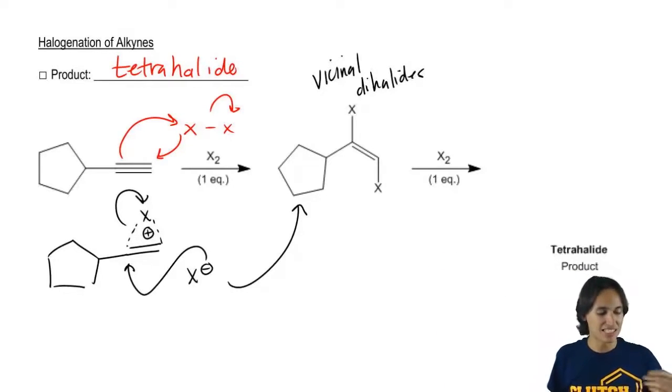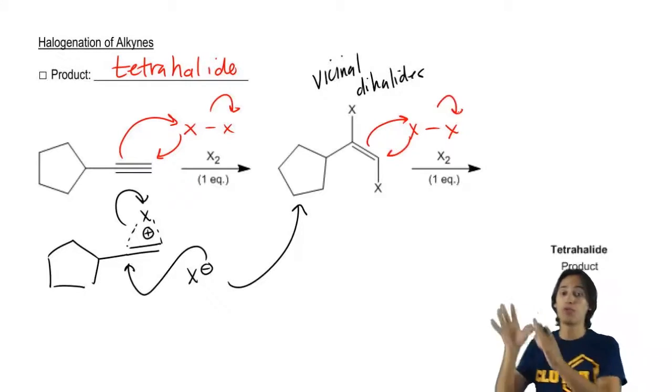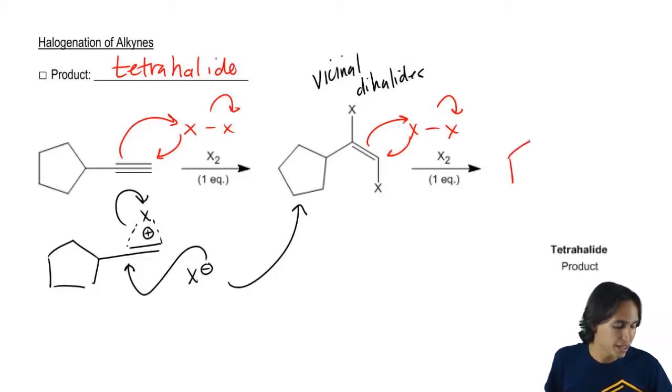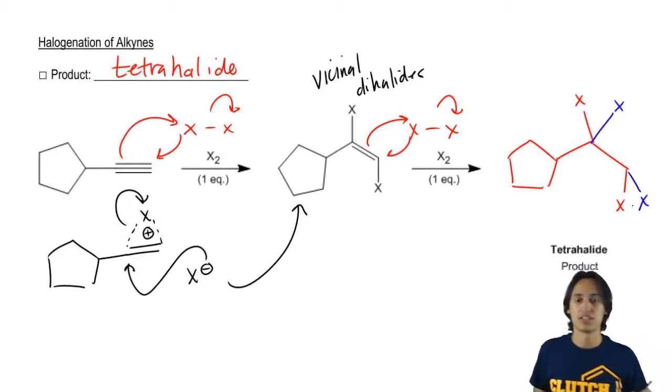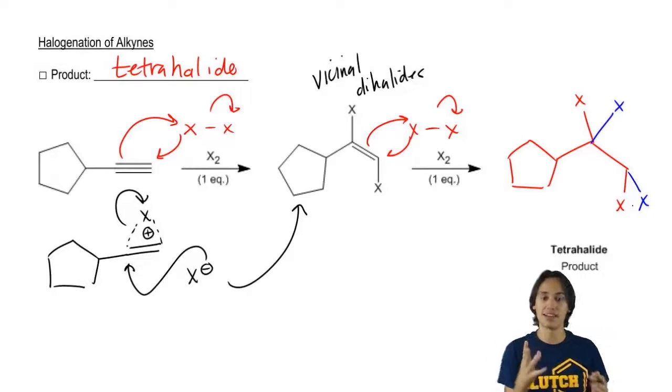So what I would wind up getting is the same thing all over again where I would react this again with XX. I would form my bridge and eventually what you wind up getting is a tetrahalide that looks like this where it would have an X and an X from the first addition and then another X and another X from the second addition.